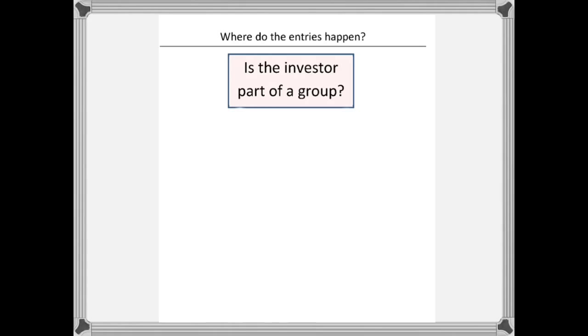Once we've ascertained that we have an associate, so we have an investor company with significant influence over an investee company, then we've got to figure out where the entries are going to happen.